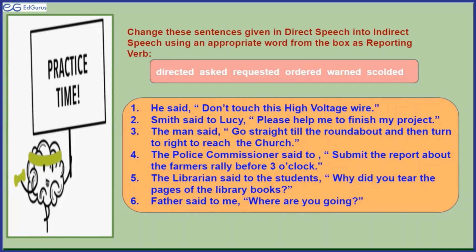Then we have to change this reporting verb according to the nature of the sentence. We have to observe the sentence — whether it is a question, a statement, an exclamation, an order, a suggestion, or simply asking, or simply giving information. According to that expression of the sentence, we have to choose an alternative — another substitution verb for the reporting verb 'said.'